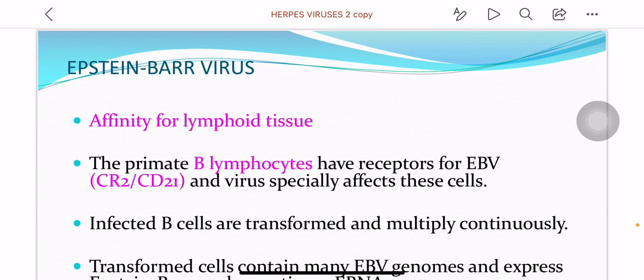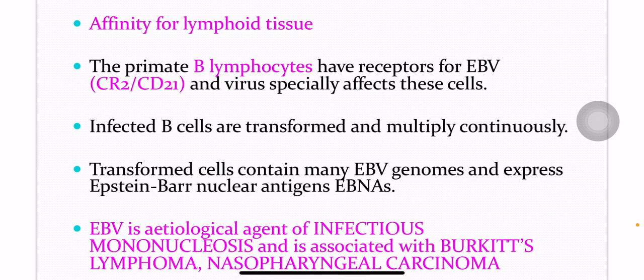The infected B cells are transformed and they multiply continuously. The transformed cells contain many EBV genomes and express Epstein-Barr nuclear antigens. Epstein-Barr virus is the etiological agent of infectious mononucleosis and is associated with Burkitt's lymphoma and nasopharyngeal carcinoma.